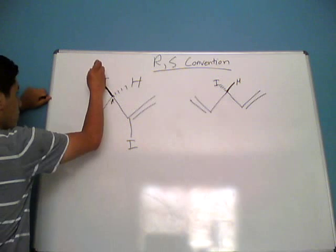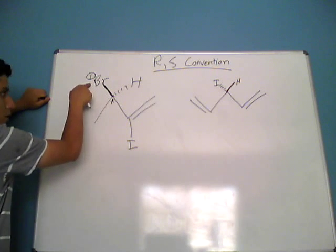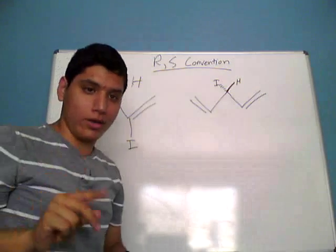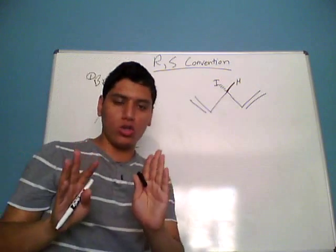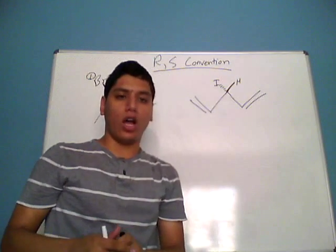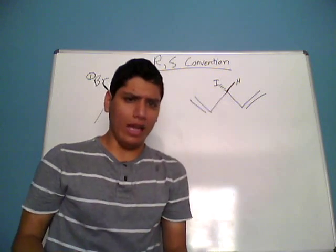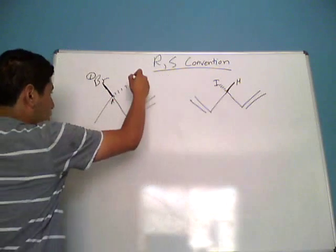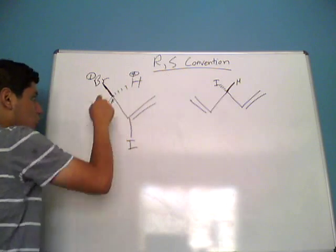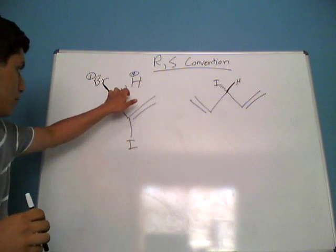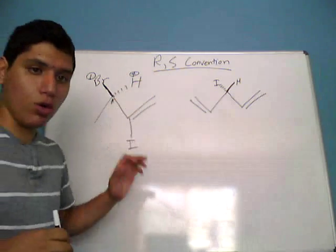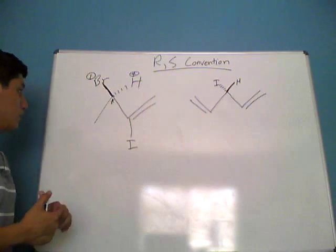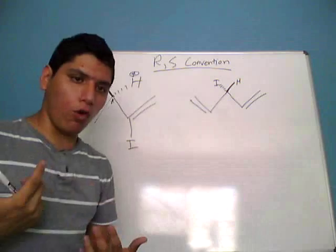Which of those — carbon, hydrogen, or bromine — has the highest atomic number? It's bromine with its atomic number of 35. Therefore, bromine is going to have the highest priority of 1. Before going to priorities 2 and 3, let's talk about the lowest priority. In the majority of cases, it's going to be hydrogen, because hydrogen has the lowest atomic number of 1, so it gets the lowest priority of 4.